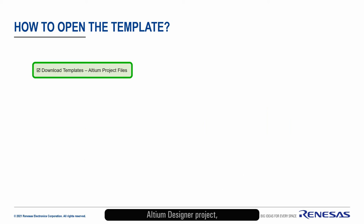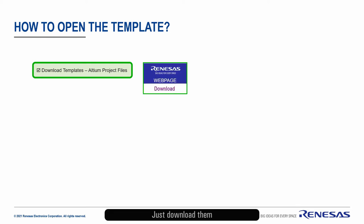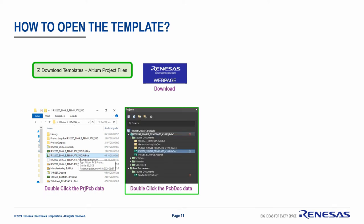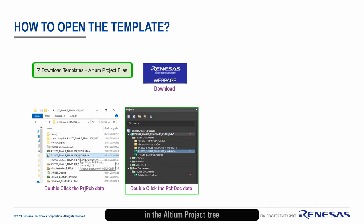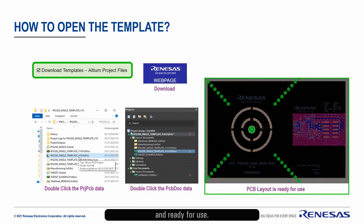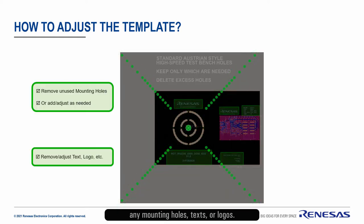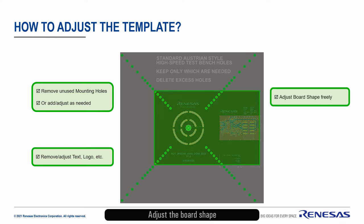You can use our pre-designed Altium Designer project and Gerber templates if you want to save time with the PCB layout design. Just download them from the Renesas webpage on the IPS Products landing page. Extract the zip container at your destination. By double-clicking the project file, it will open in Altium Designer. Double-click the PCB in the Altium project tree and the layout will be opened and ready for use. Feel free to adjust or remove any mounting holes, texts, or logos. Adjust the board shape to fit the PCB into your system.